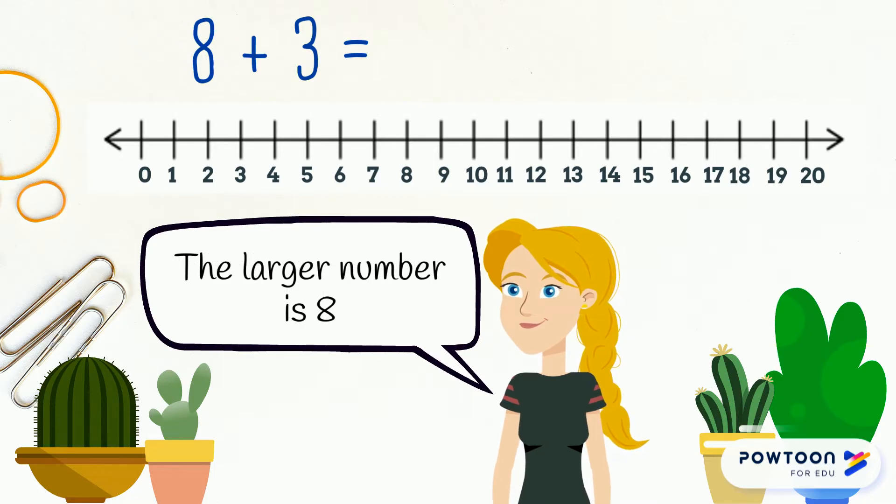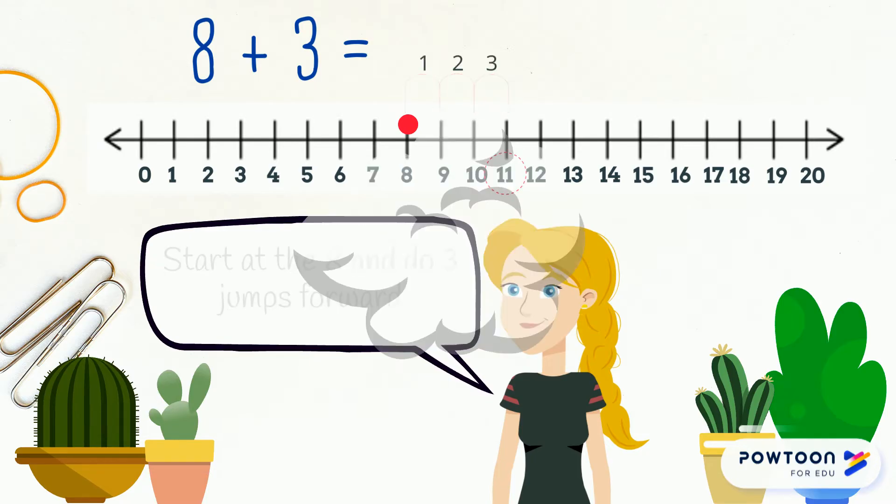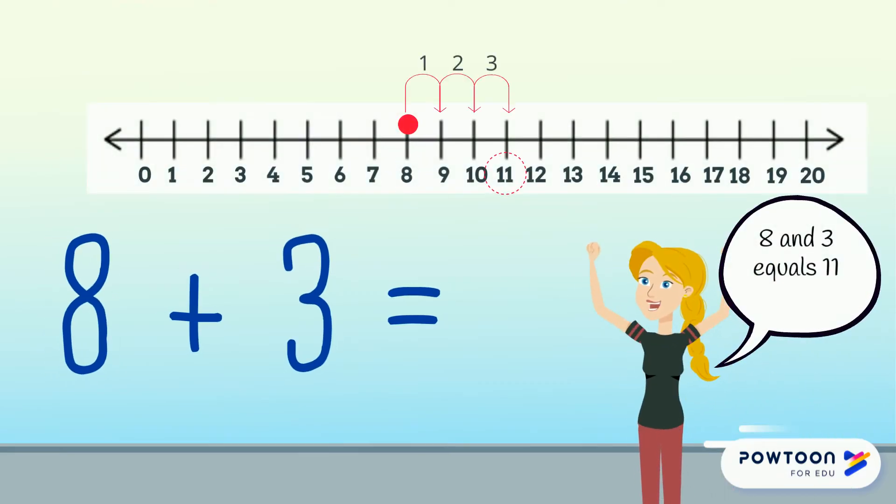The larger number is 8. Start with 8 and do 3 jumps forward. So 8 plus 3 equals 11. Well done.